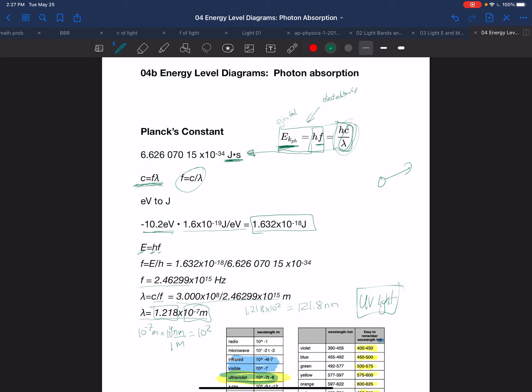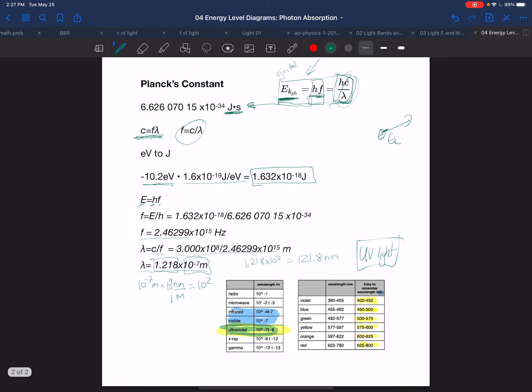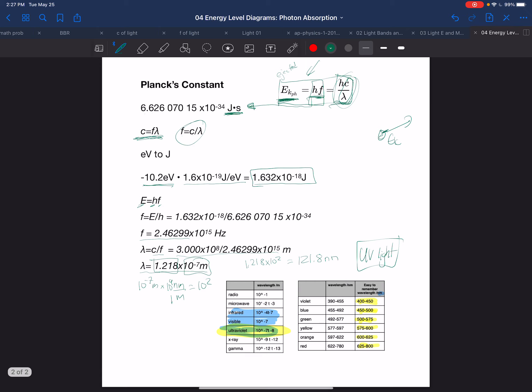So again, by measuring the kinetic energy of the ejected electron, we can then determine the frequency and the wavelength and then identify what the light was, what the wavelength, what the frequency of the light that excited that electron was.